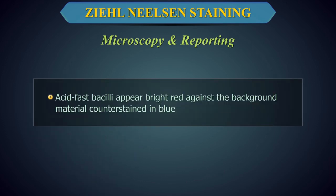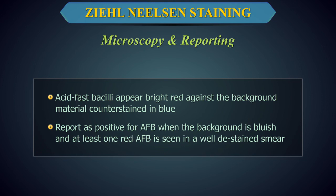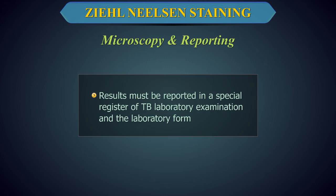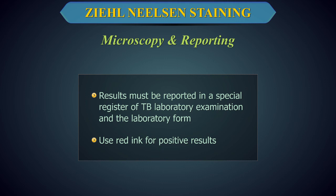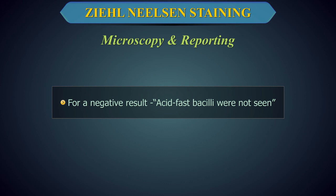Acid-fast bacilli appear bright red against the background material, counterstained in blue. Report as positive for AFB when the background is bluish and at least one red AFB is seen in a well-destained smear. They can occur singly or in small groups and rarely in large clumps. Results must be reported in a special register of tuberculosis laboratory examination and the laboratory form. Use red ink for positive results; reports must be provided as soon as possible. For a negative result, report: acid-fast bacilli were not seen.